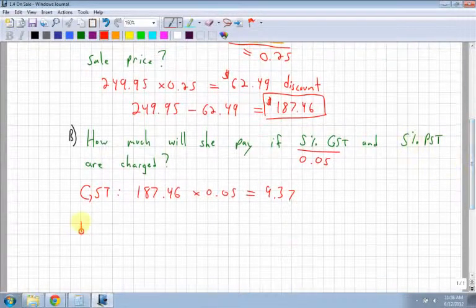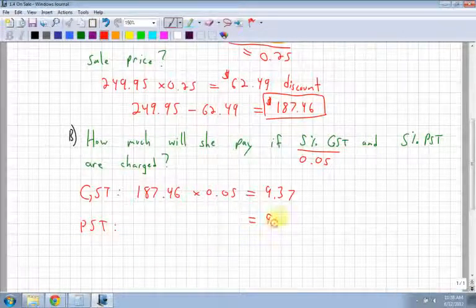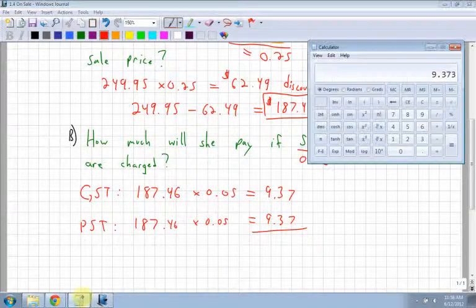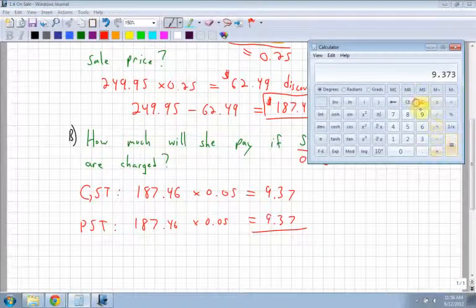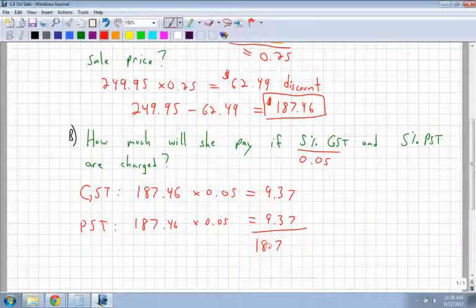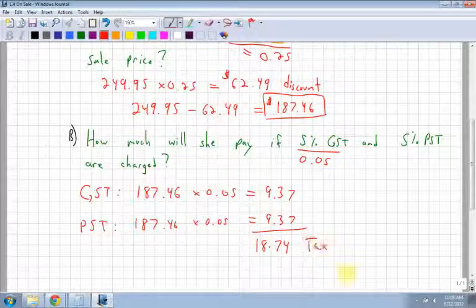Notice that the PST is exactly the same amount. So my PST is going to be the same. It's going to be $9.37 because I'm going to be doing the exact same calculation. $187.46 times 0.05. I can add both those values together. So I have $9.37 plus $9.37, which is $18.74. And that's my tax, total tax. I have GST, PST, my total tax.